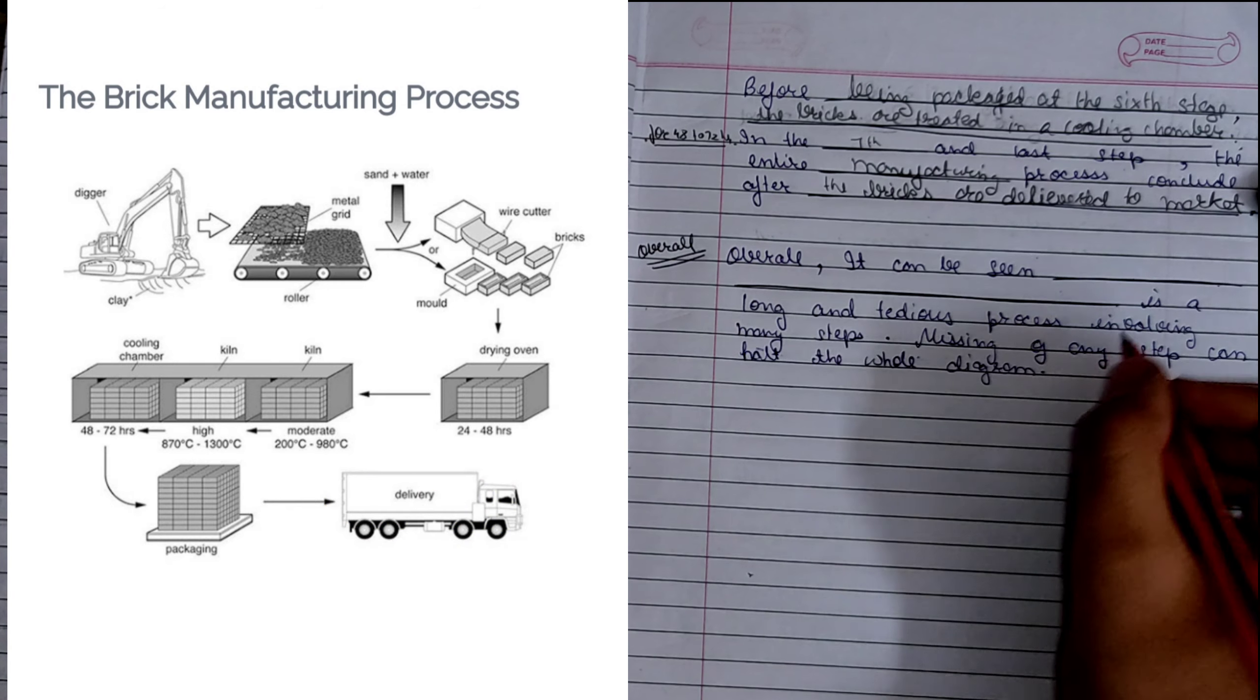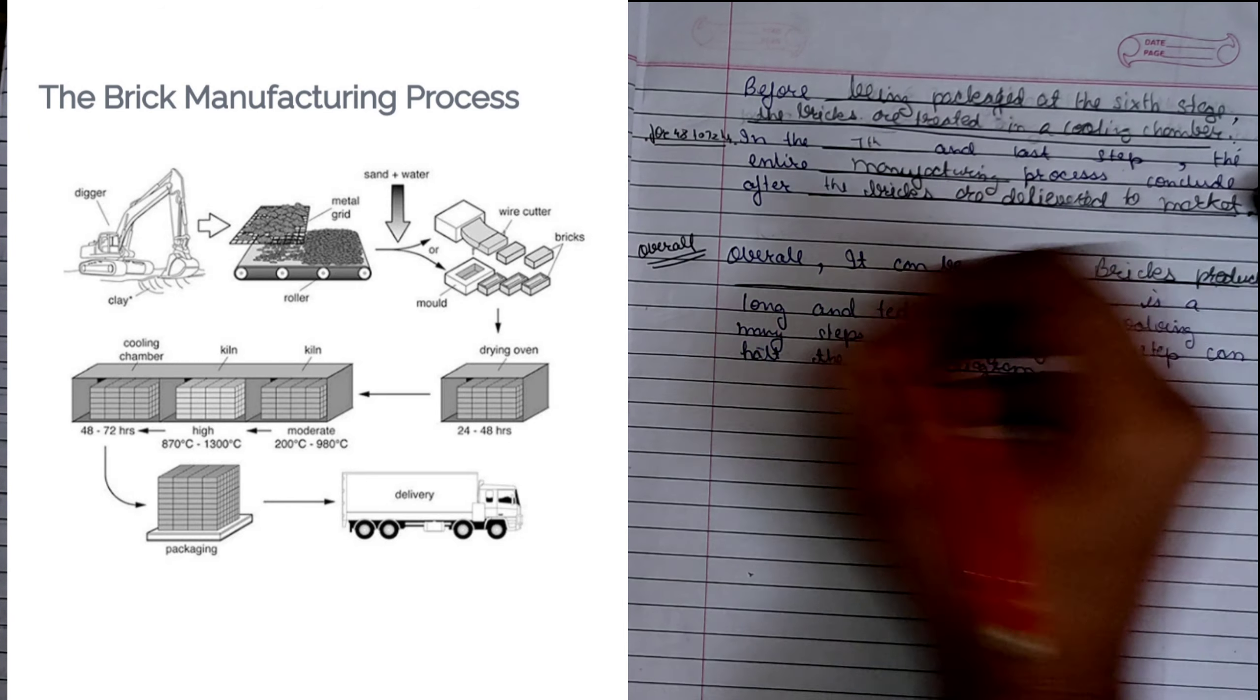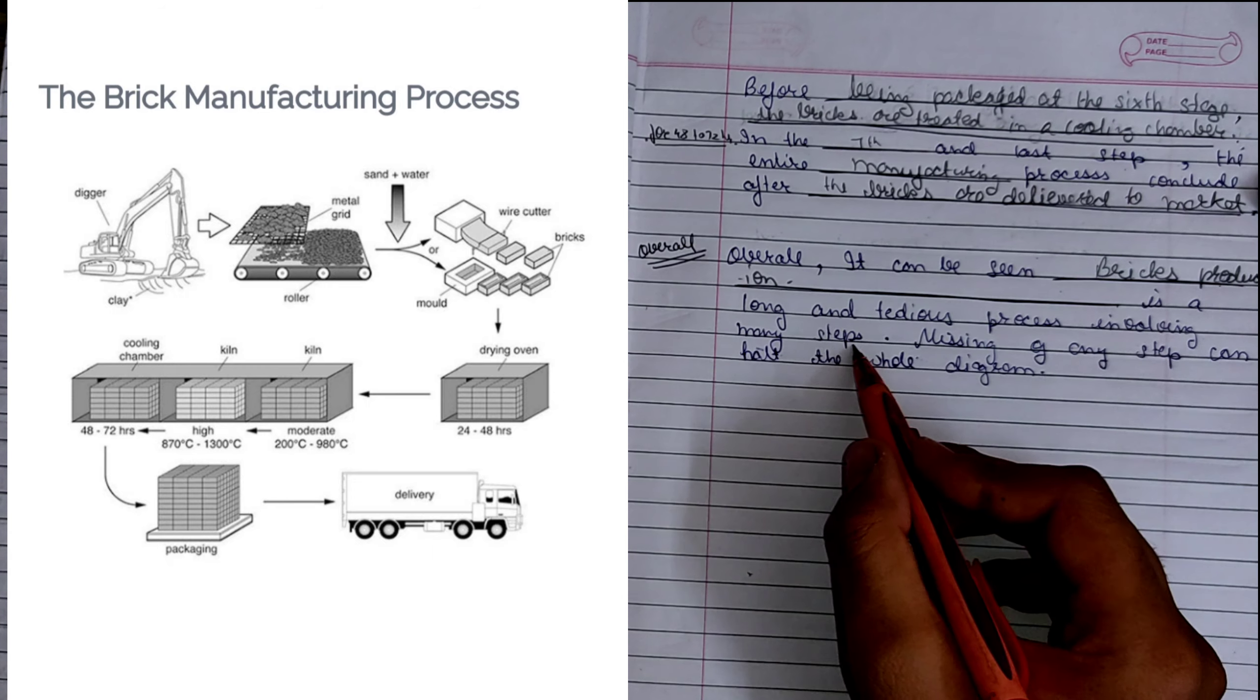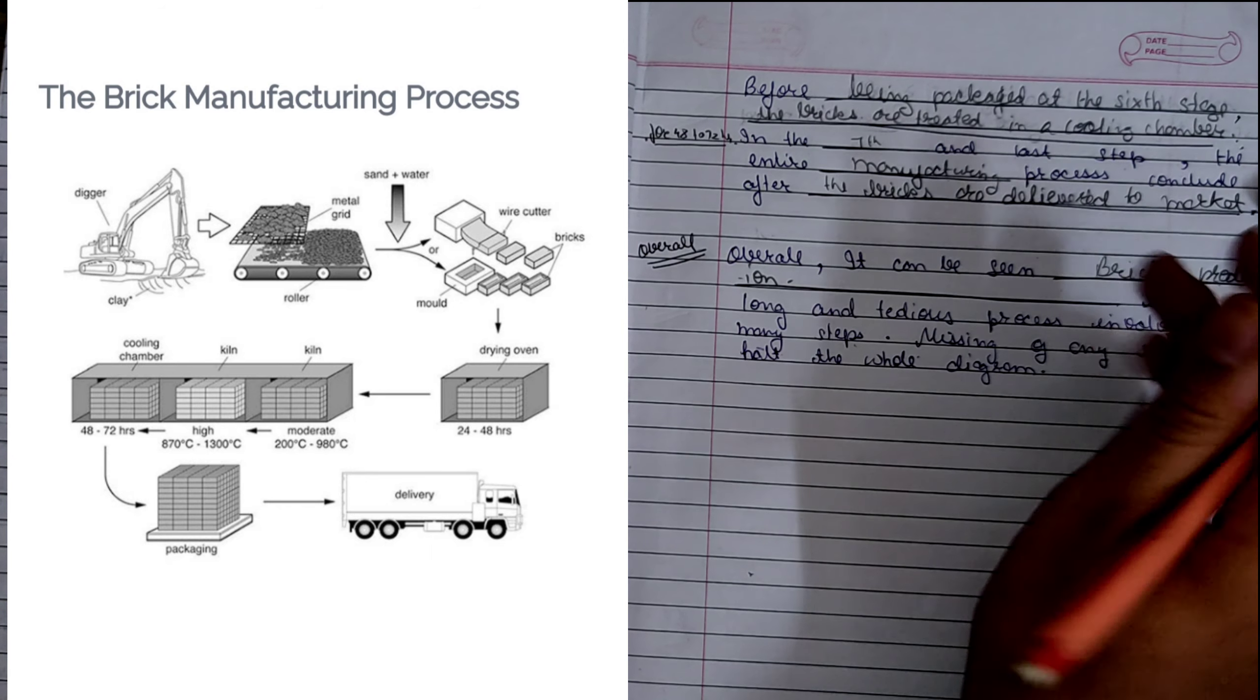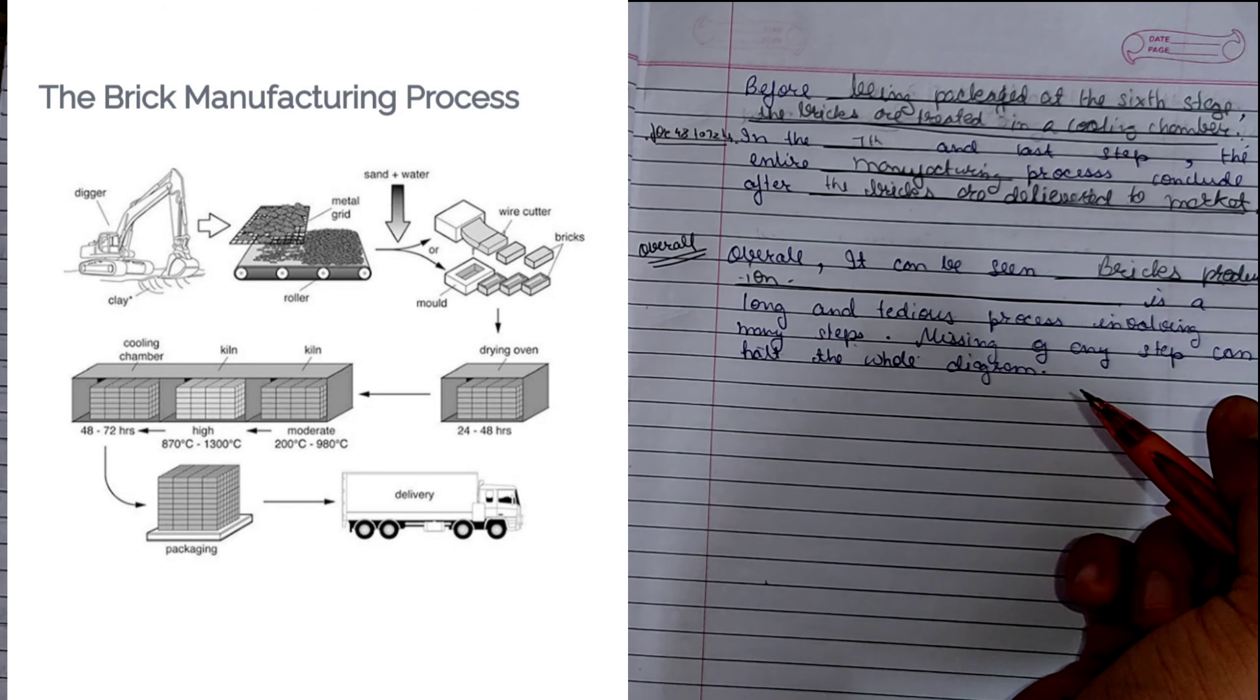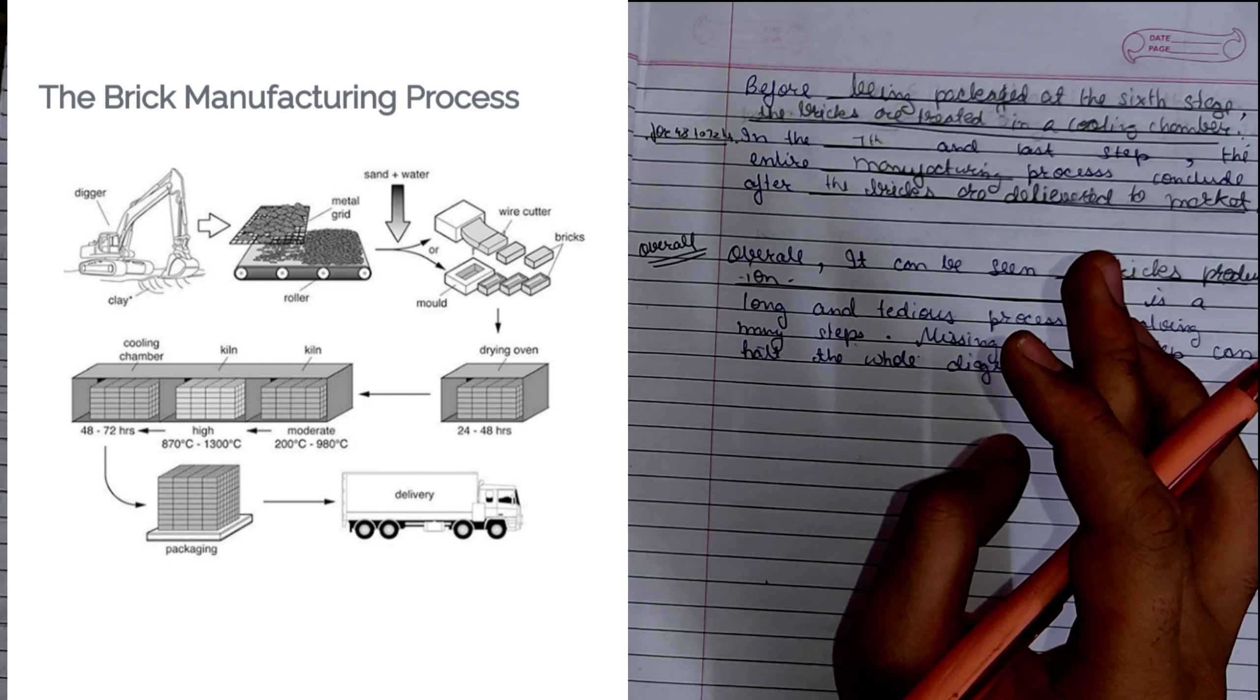Overall, it can be seen bricks production is a long and tedious process involving many steps. Missing of any step can halt the whole diagram. You have to fill only one word. Your overall is ready. Now whole diagram template is available for you. It's a ready made. You can write any process diagram by following this. And no one can stop you in getting three out of three in writing task one.